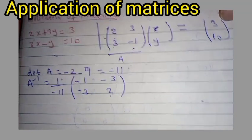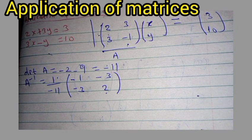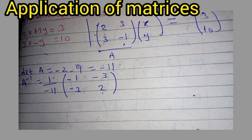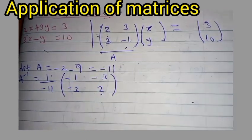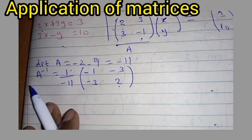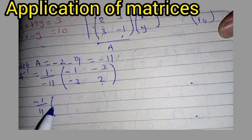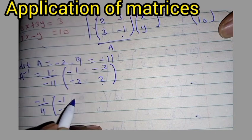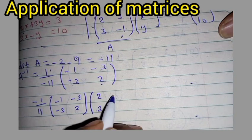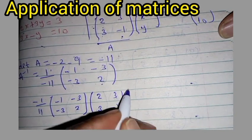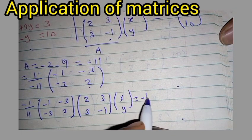Once you have found the inverse, the next thing you do is to pre-multiply this matrix by the inverse. You pre-multiply both the right-hand side and the left-hand side by the inverse. On the left-hand side, our inverse is negative 1 over 11 times [-1, -3; -3, 2], multiplied by the matrix [2, 3; 3, -1] times the vector [x, y].